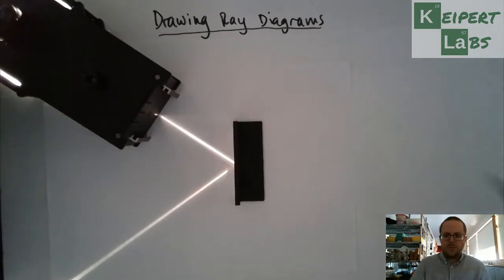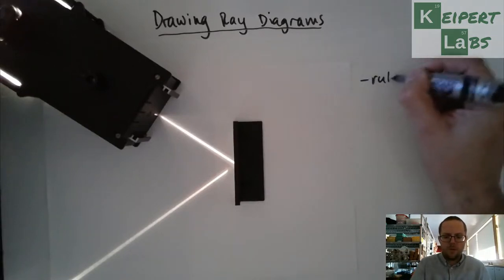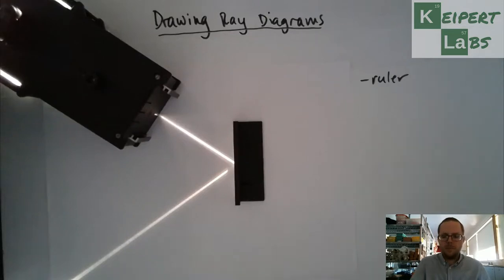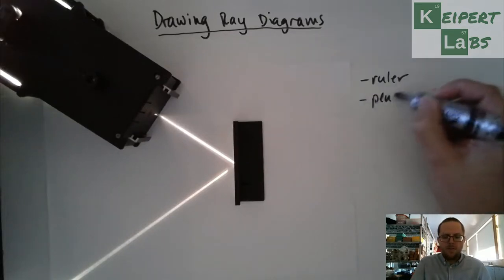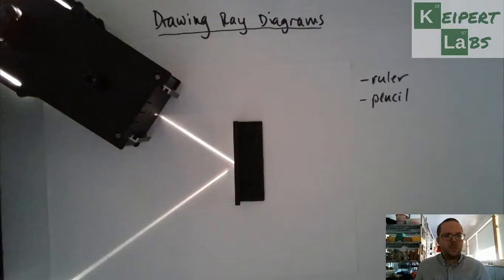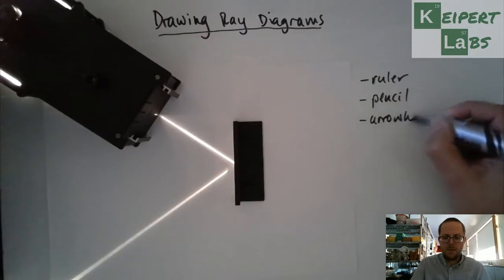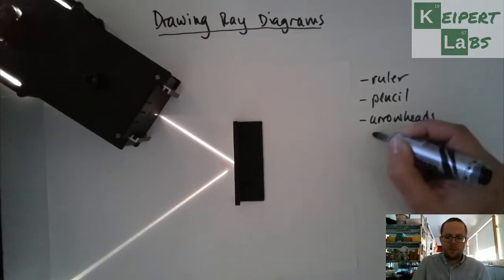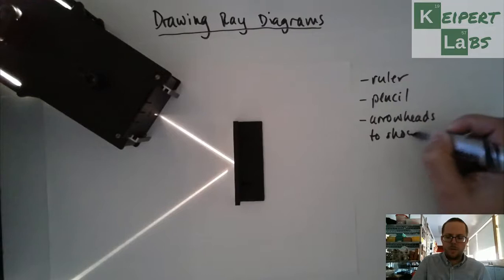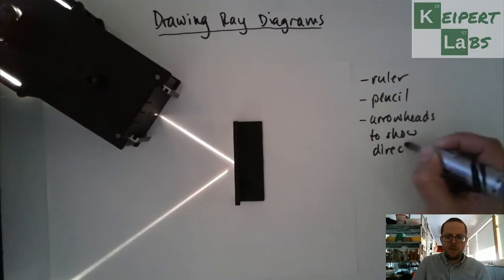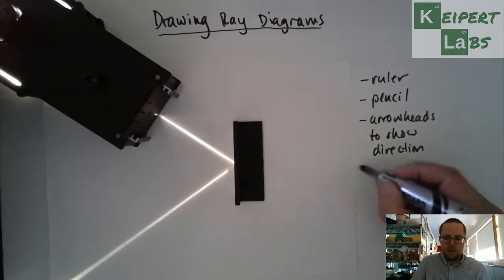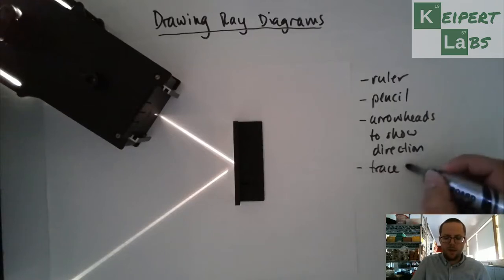I'm going to show you an example with a mirror like I've got here and with lenses. So some of the rules that we've got to follow: You've got to always use a ruler. We don't freehand the lines here. We also use drawing in pencil. We use arrowheads to show direction as far as which way the light is coming from and going to, and then we also trace around the object.